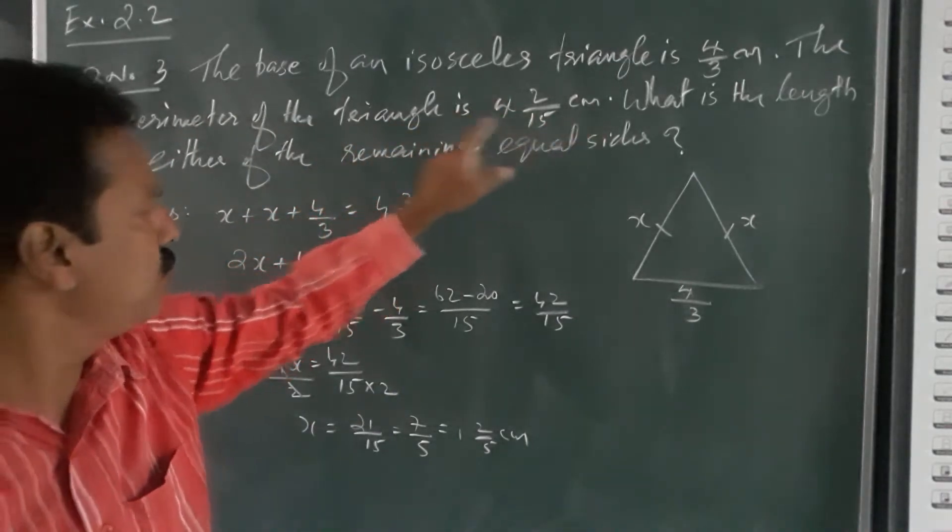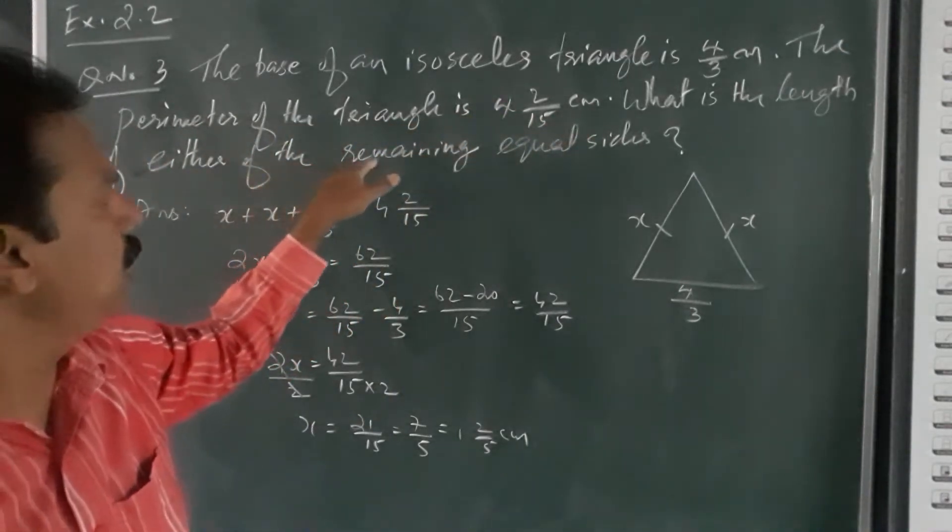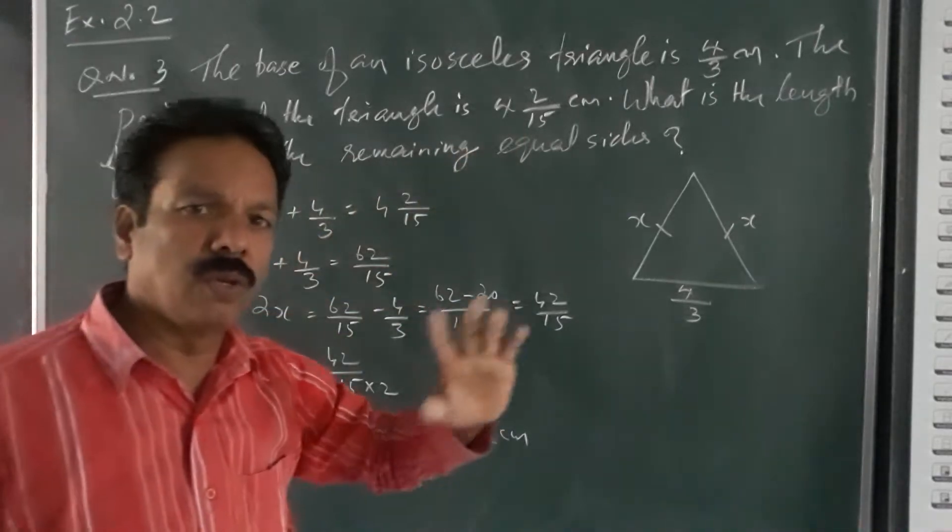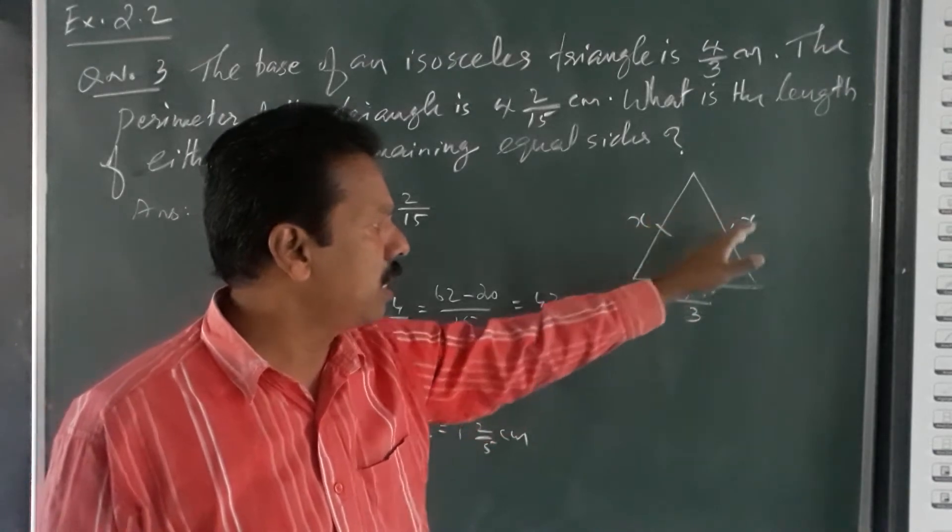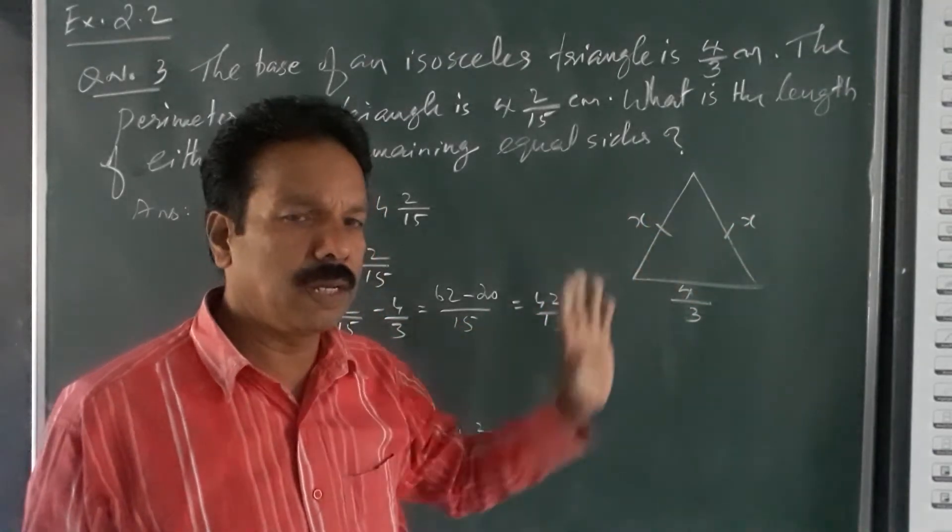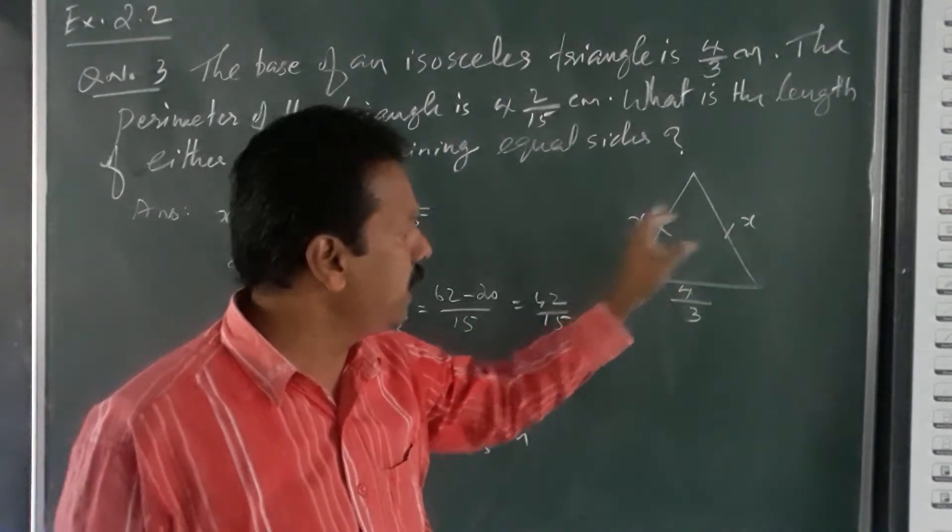What is the length of either of the remaining equal sides? You know isosceles triangle means a triangle in which any of the two sides are equal, any of the two sides are equal.